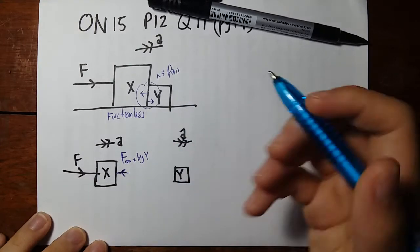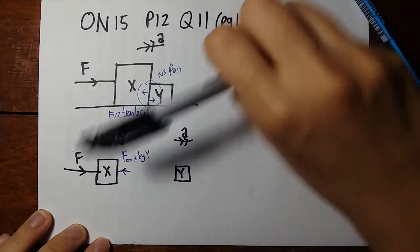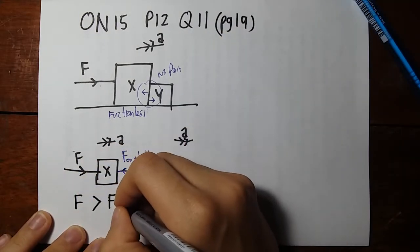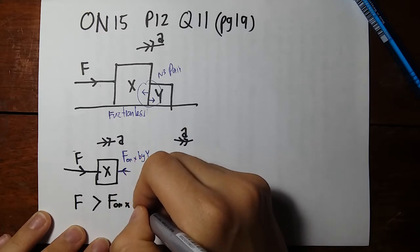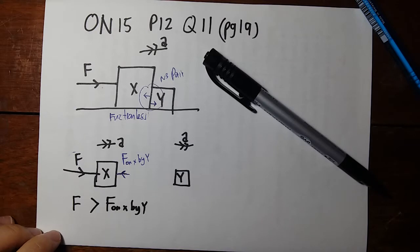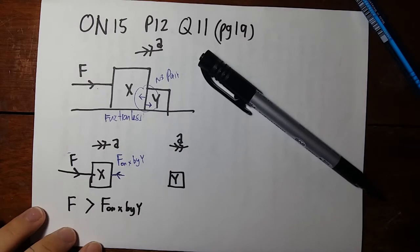So this force should be bigger. You can say F is bigger than this one, F on X by Y. And if you actually want to calculate the acceleration, you can do that later using F equals ma, resultant force equals m times a.